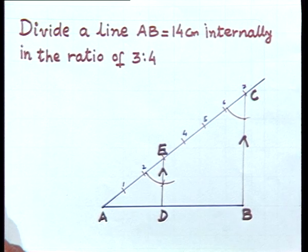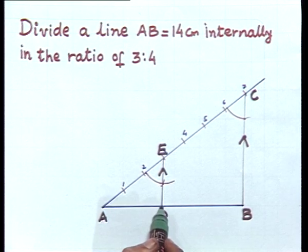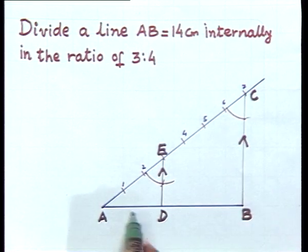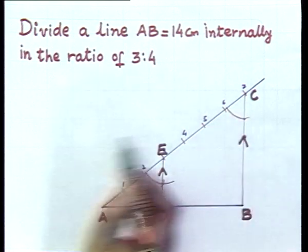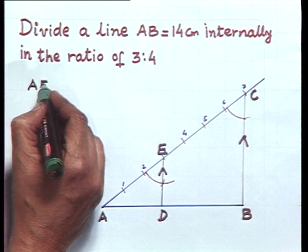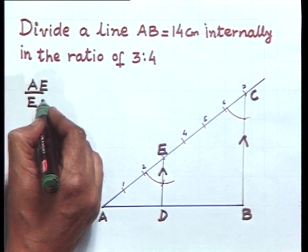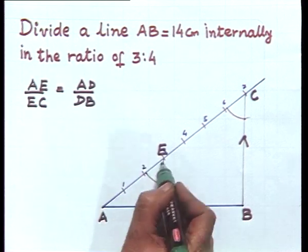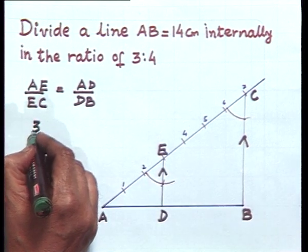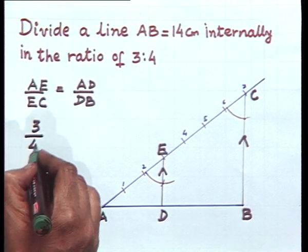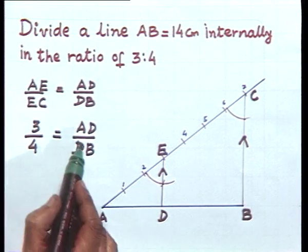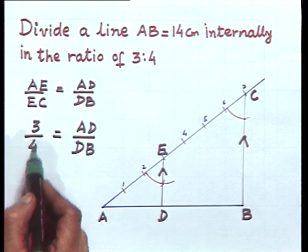Now, if you recall the basic proportionality theorem, it is stated that in a triangle, if a line is drawn parallel to any side of a triangle — here we have drawn line DE parallel to side BC — this line will divide the two sides in the same ratio, that is AE upon EC is equal to AD upon DB. Now, AE is three parts and EC is four parts. So three upon four equals AD upon DB. We can see that the ratio of the length AD to DB is nothing else but three is to four.